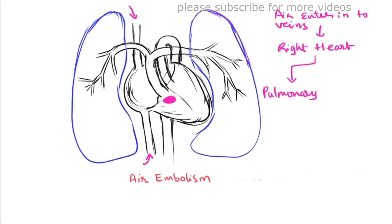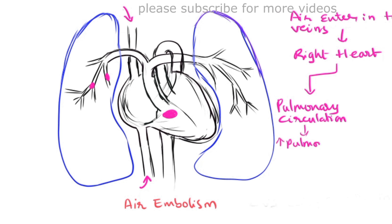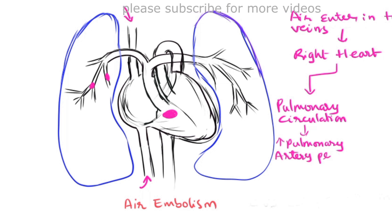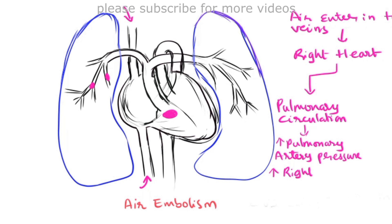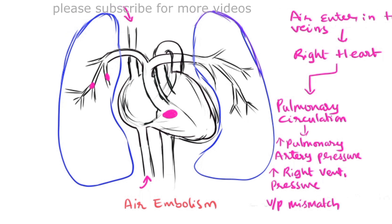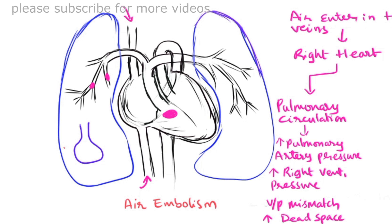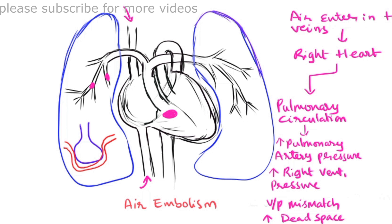Air bubbles from the right side may travel and enter into the pulmonary circulation, lodging in the pulmonary blood vessels. This leads to increased pulmonary artery pressure due to blockage in the terminal parts of the pulmonary artery, and increases right ventricular pressure due to back pressure. This causes ventilation-perfusion ratio mismatch because of reduced perfusion to the pulmonary circulation, and increases dead space in the pulmonary alveoli.